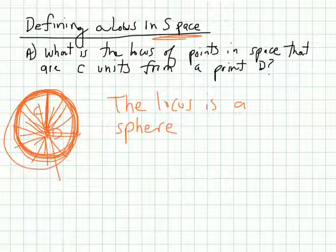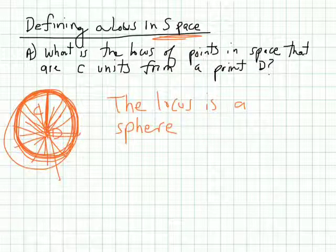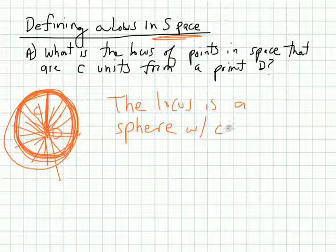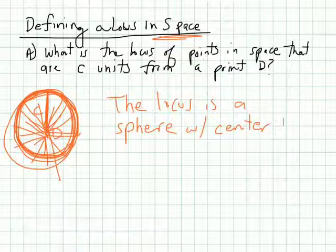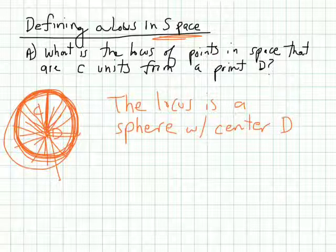And you're going to create a globe here, right? This locus is a sphere with center D and radius C.